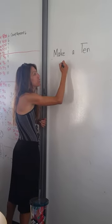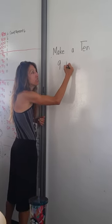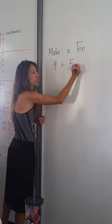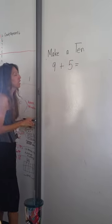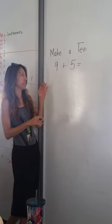I'm going to talk about the make a 10 strategy, which we're teaching the kids how to do on paper, and eventually they're going to be able to do it mentally. So what it looks like is this.